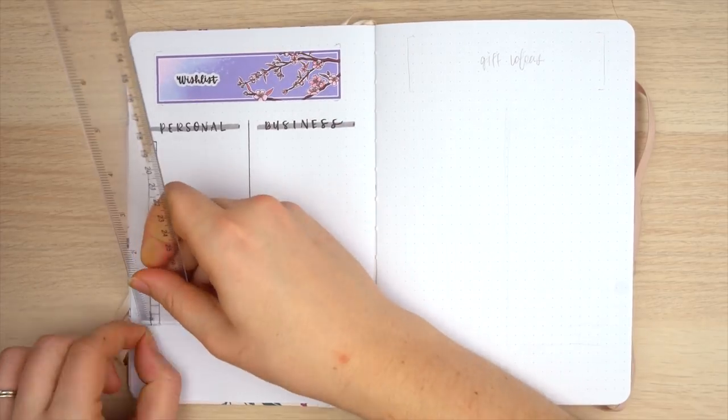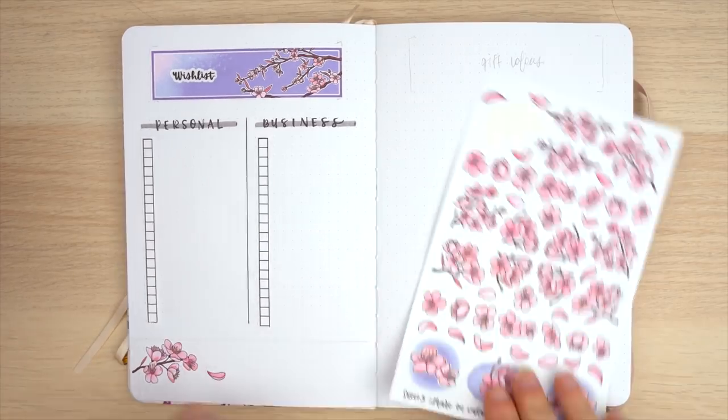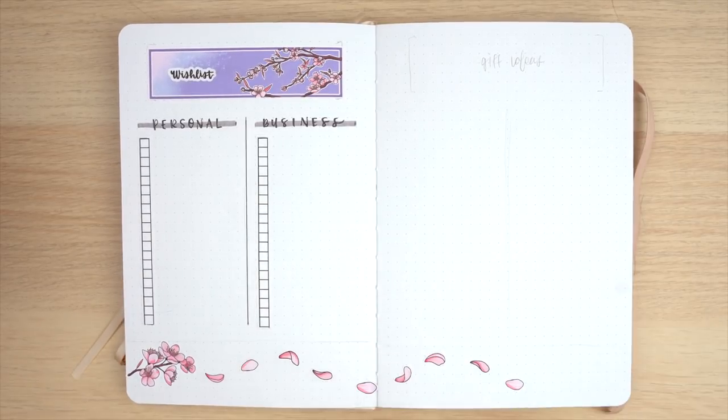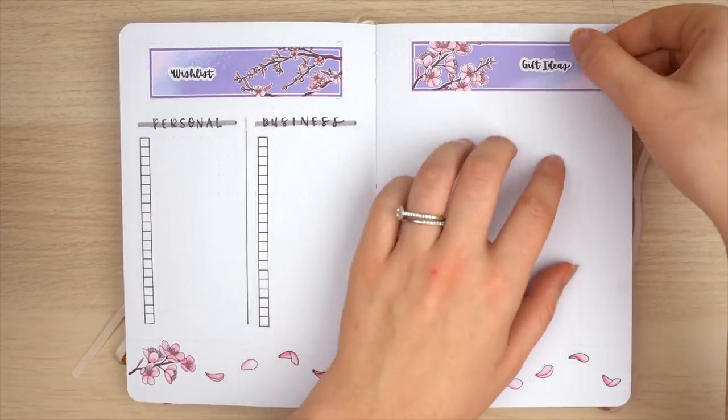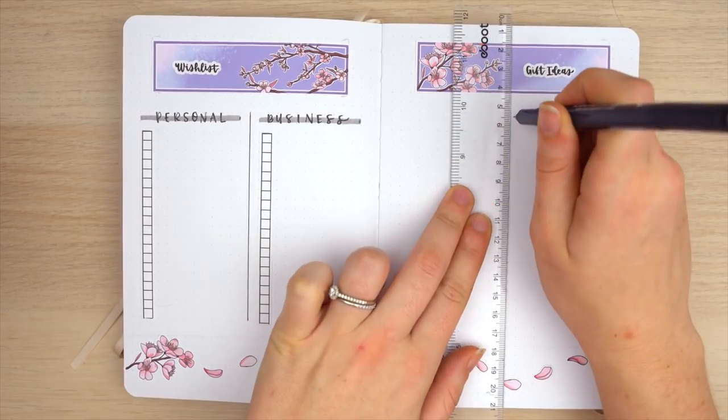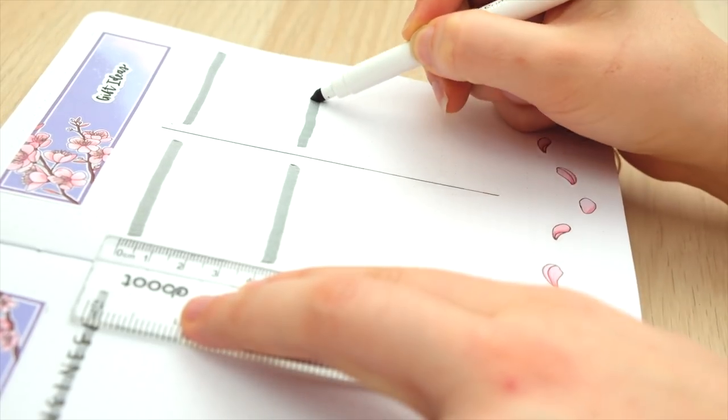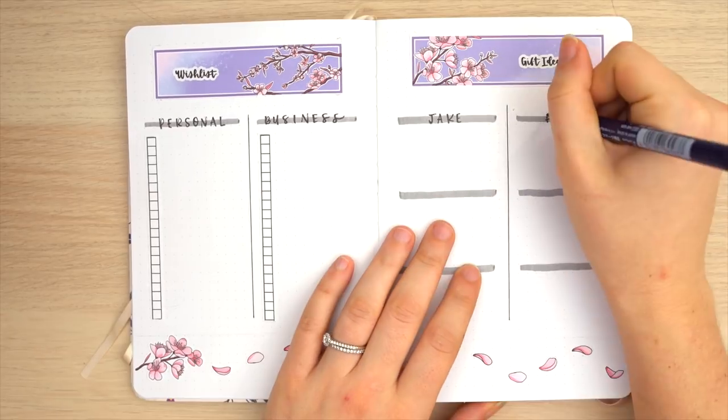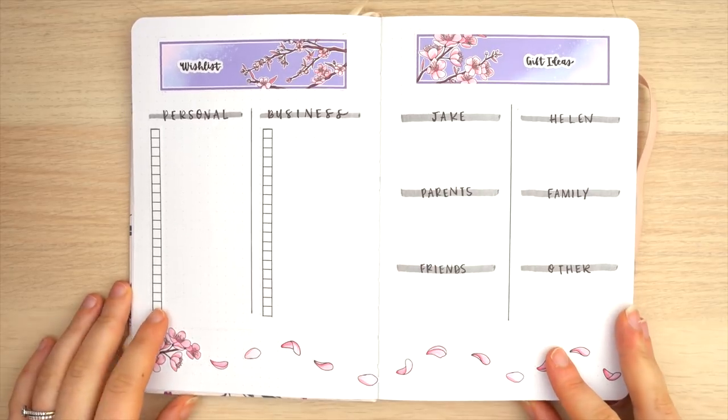I'm using that same Crayola Super Tip marker along with my Tombow Fudenosuke hard tip brush pen to create my personal and business headers here, and then I just used these checkbox list stickers that come with the freebie sheet that I give out with every single order from my shop. Next to that, I'm getting started on that gift ideas page. I'm really keeping this whole setup very simple - I just wanted to focus on using those springtime stickers for a bit of decoration but then keeping the functional components pretty simple and bare bones. I'm just creating a section for each person in my life.